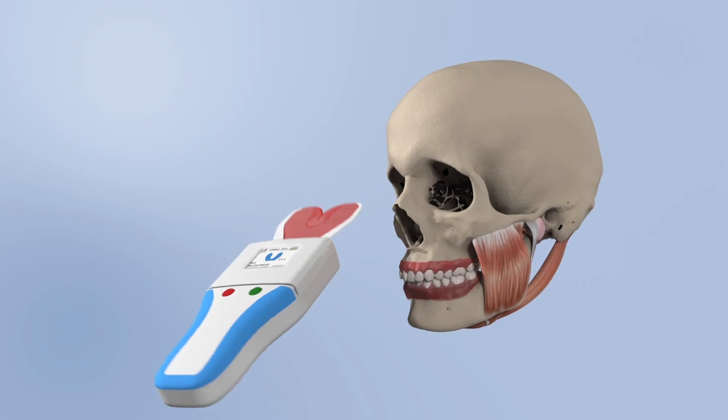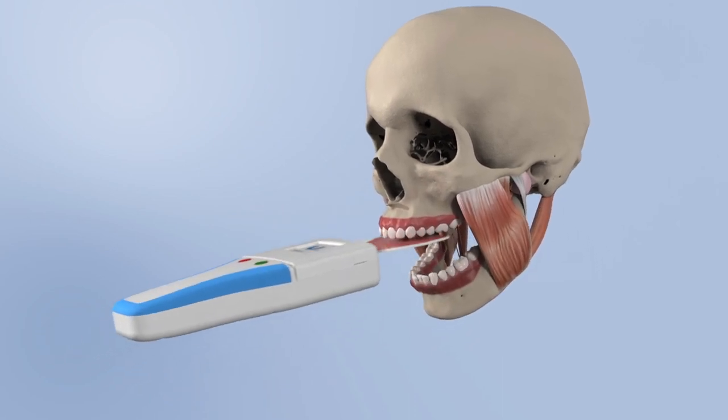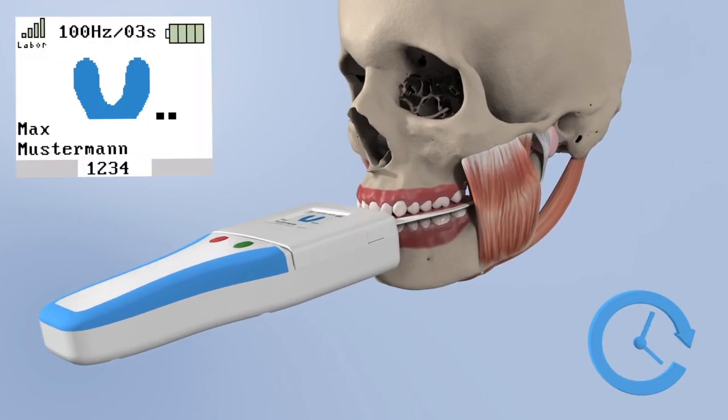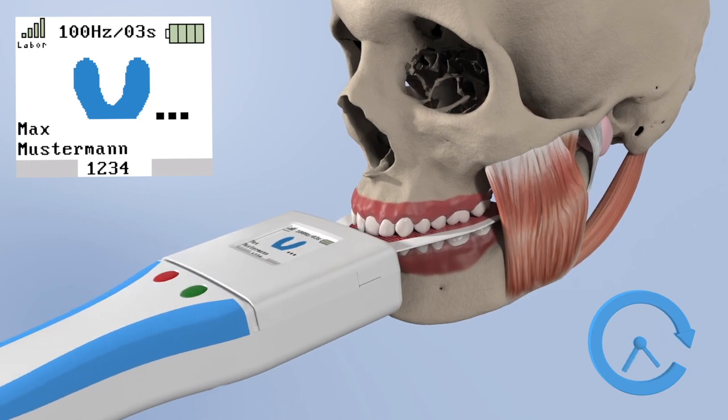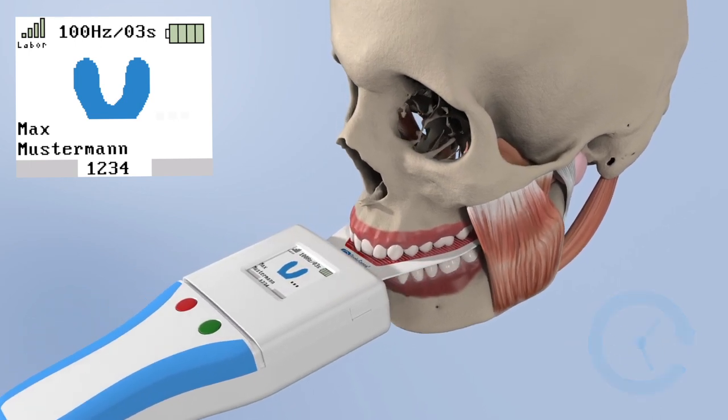In addition, the recorded data can be stored as two and three dimensional graphics, including the masticatory distribution with up to 150 images per second.